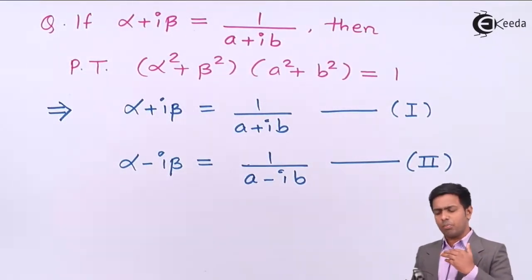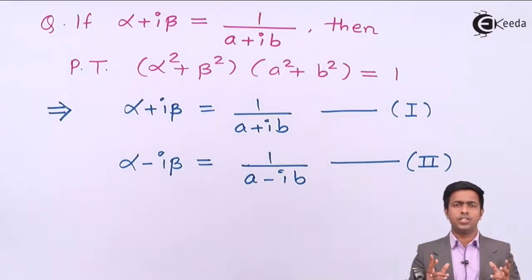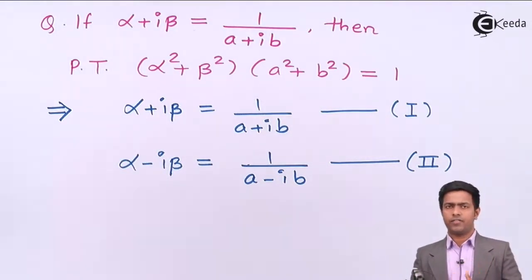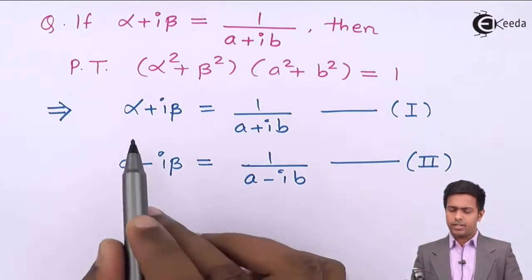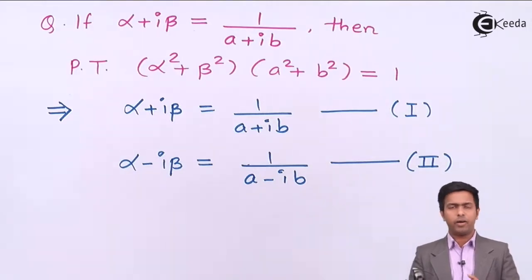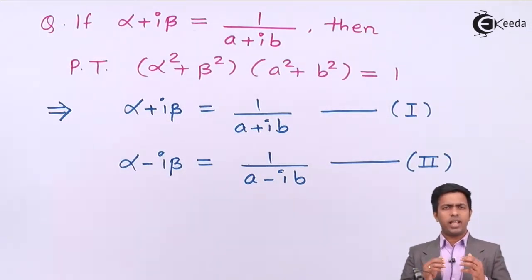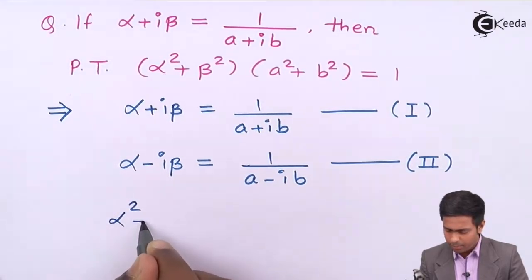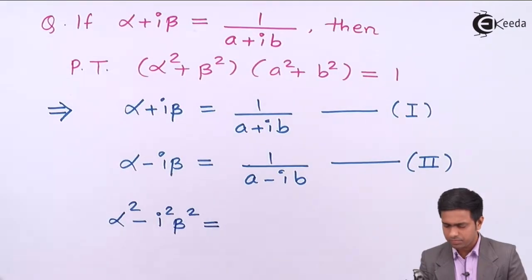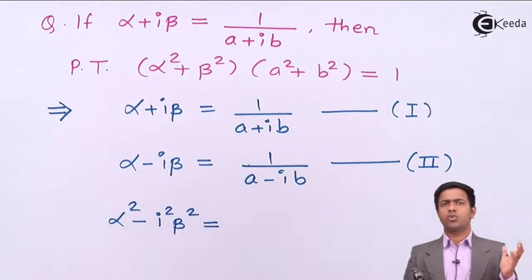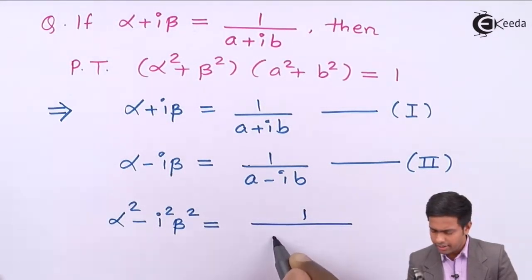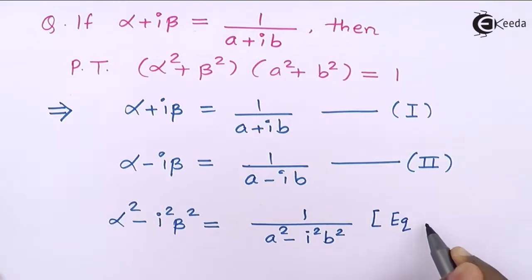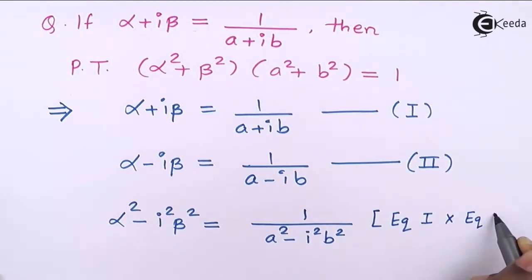Now to get the result, we multiply equation number one with equation number two. Whenever we multiply two equations, we multiply left hand side with left hand side and right hand side with right hand side. Multiplying the left hand sides gives alpha plus i beta into alpha minus i beta, which by the formula a squared minus b squared equals a minus b times a plus b gives alpha square minus i square beta square. On the right hand side we get 1 upon a square minus i square b square.